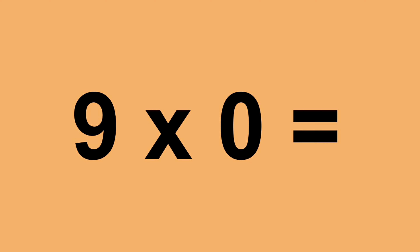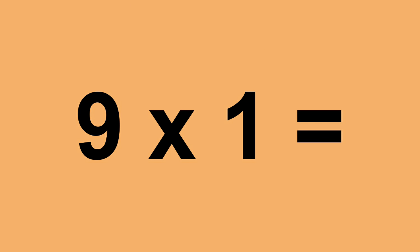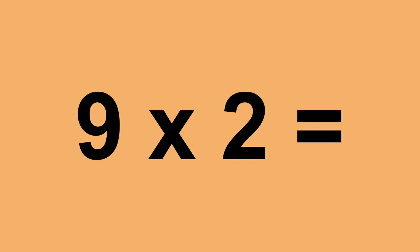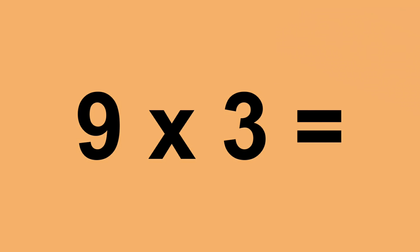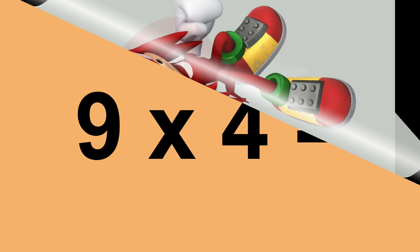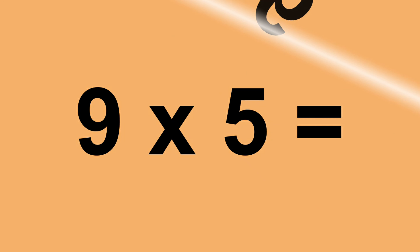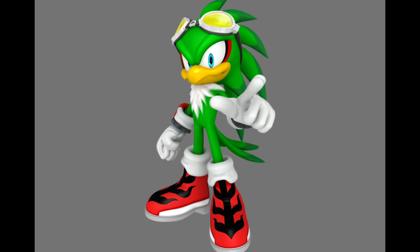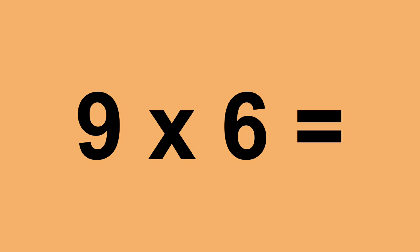Nine times zero equals zero. Nine times one equals nine. Nine times two equals eighteen. Nine times three equals twenty-seven. Nine times four equals thirty-six. Nine times five equals forty-five. Nine times six equals fifty-four.